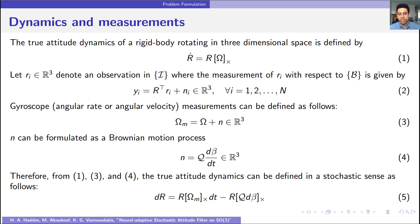Therefore, considering the above listed equations, the true attitude dynamics can be defined in a stochastic sense as follows: D R equal R skew symmetric of omega M DT minus R multiplied by skew symmetric of Q D beta.